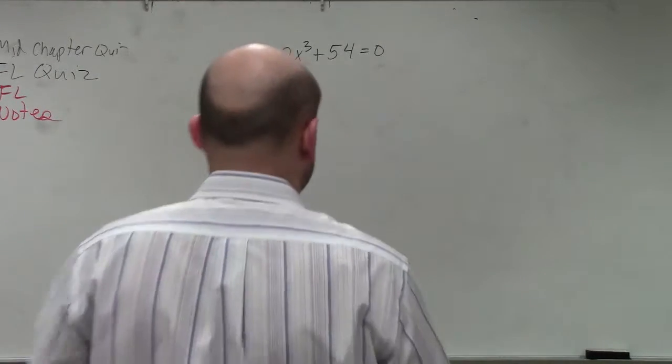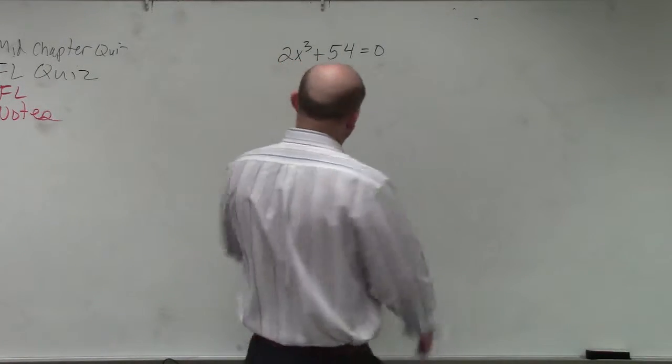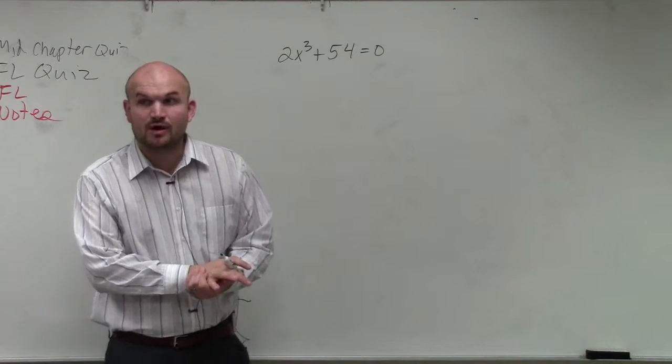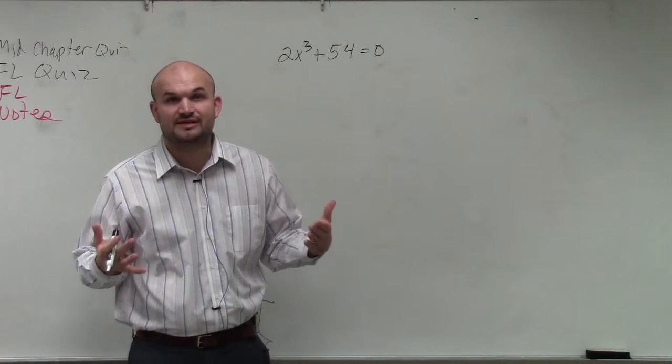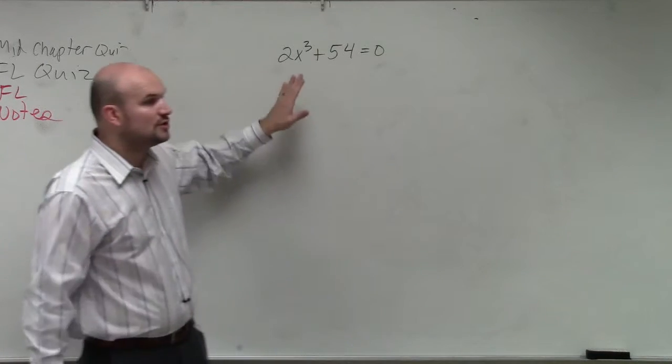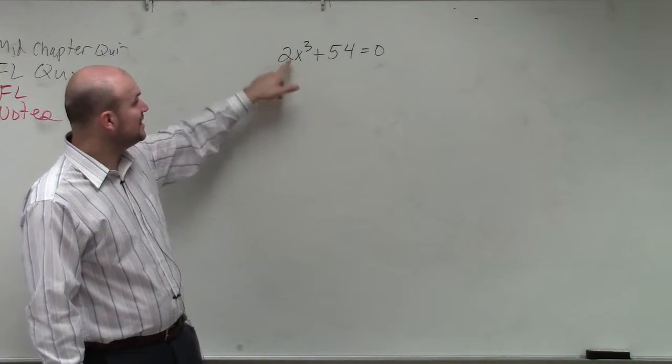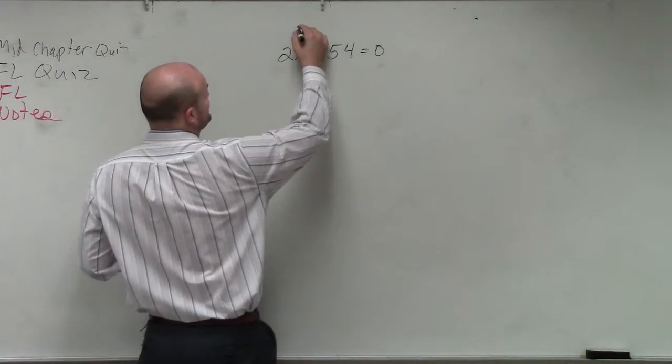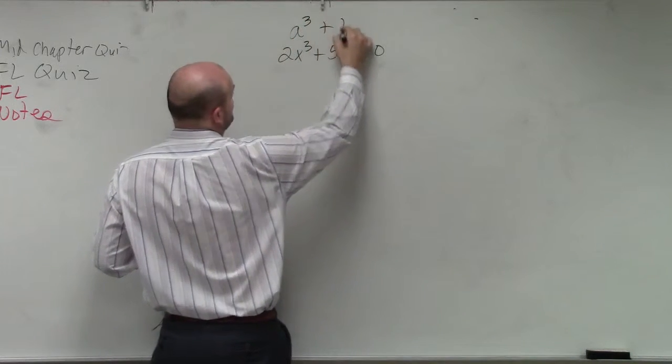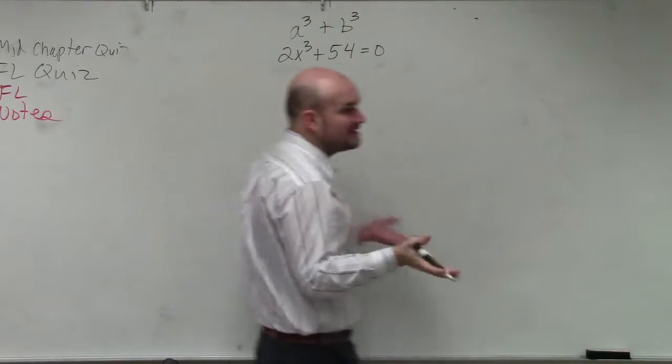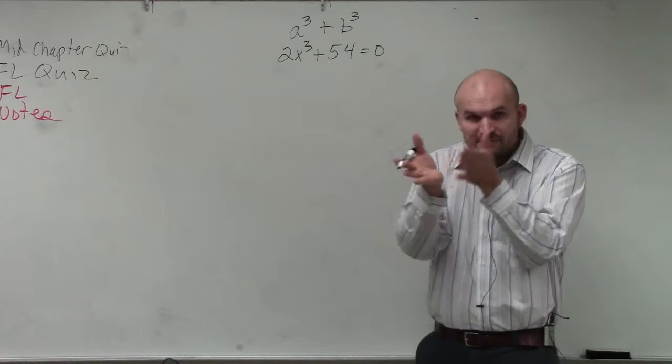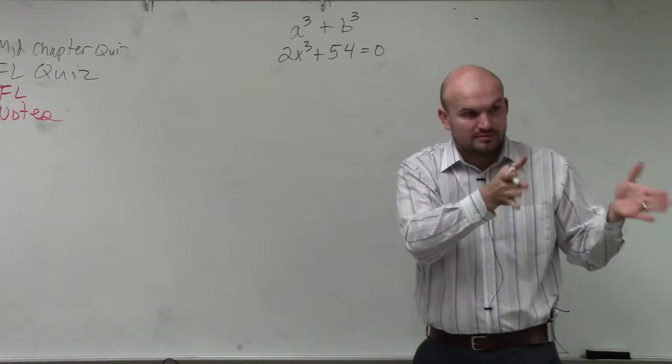So first thing we do when we're solving, all I ask you guys to do is to refactor this. Before you do any kind of factoring with sum and difference of two cubes, you want to make sure you can factor out a GCF. Because we notice that this is in the form of a³ plus b³. And that's what we talked about last class. Do you guys agree we have something cubed and we have another number?